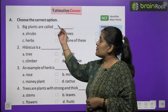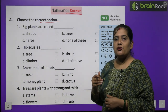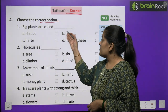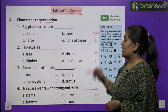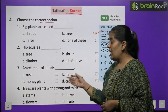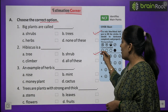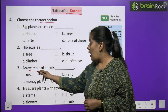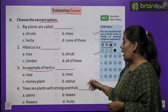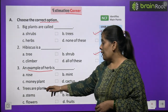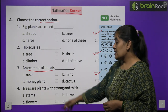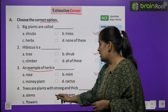Now estimation corner — अब हम lesson के आधार पर कुछ exercise करेंगे। Exercise A: Choose the correct option. 1. Big plants are called — trees. 2. Hibiscus is a — shrub, पेड़ों की तुलना में छोटे होते हैं। 3. An example of herb is — mint. 4. Trees are plants with strong and thick — stem यानी तना बहुत मजबूत होता है।